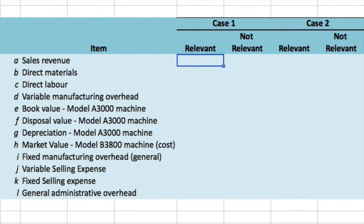Problem 12.1 is identifying relevant costs — learning objective number one. The management of Bohm and Graf, a Danish furniture manufacturer, must determine whether certain costs are relevant in two different cases, and we'll do each of the cases independently. Let's have a look at Case 1: the company chronically runs at capacity.